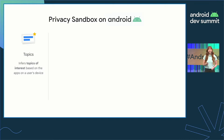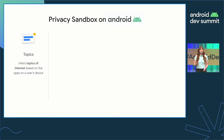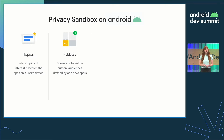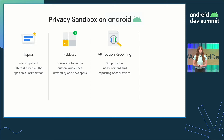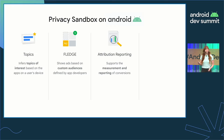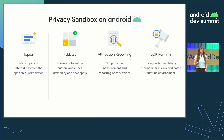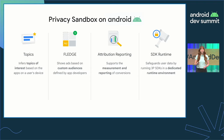The Topics API gathers on-device information to infer topics of interest to a particular user, which advertising SDKs can use to serve relevant ads. The Fledge API orchestrates ad selection workflows and shows ads based on custom audiences defined by app developers. The Attribution Reporting API supports the measurement of clicks, views, and conversions and sends reports to advertisers detailing the performance of an ad. The SDK Runtime allows third-party ads-related SDKs to run in a dedicated runtime environment that provides safeguards around user data collection and sharing.